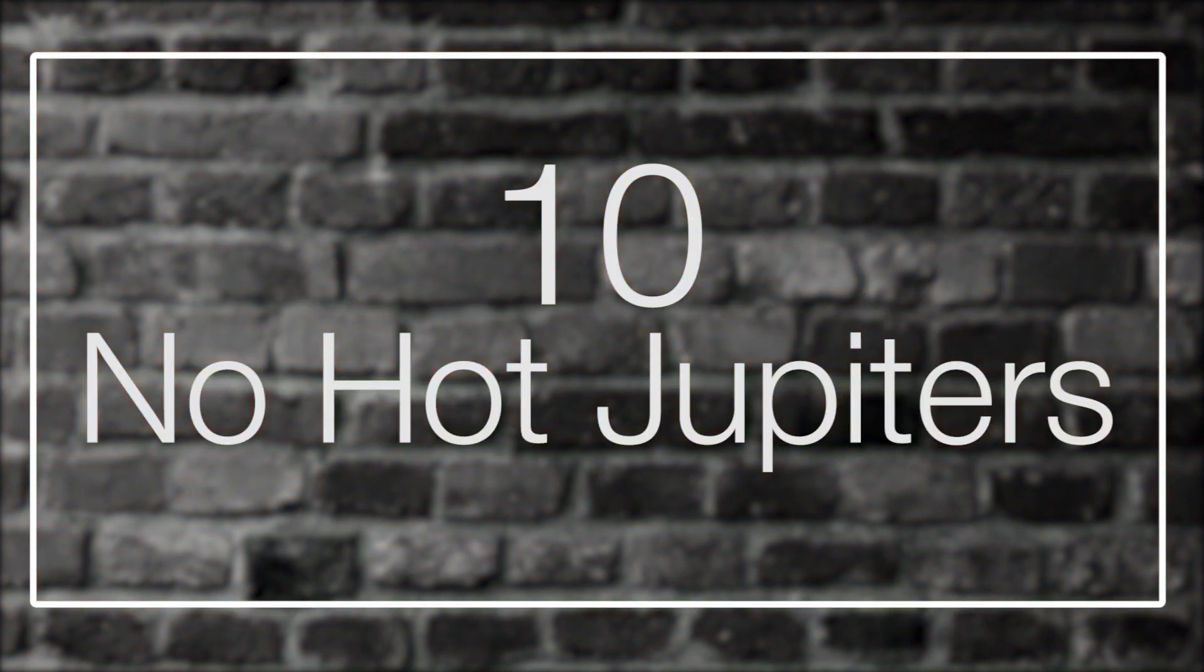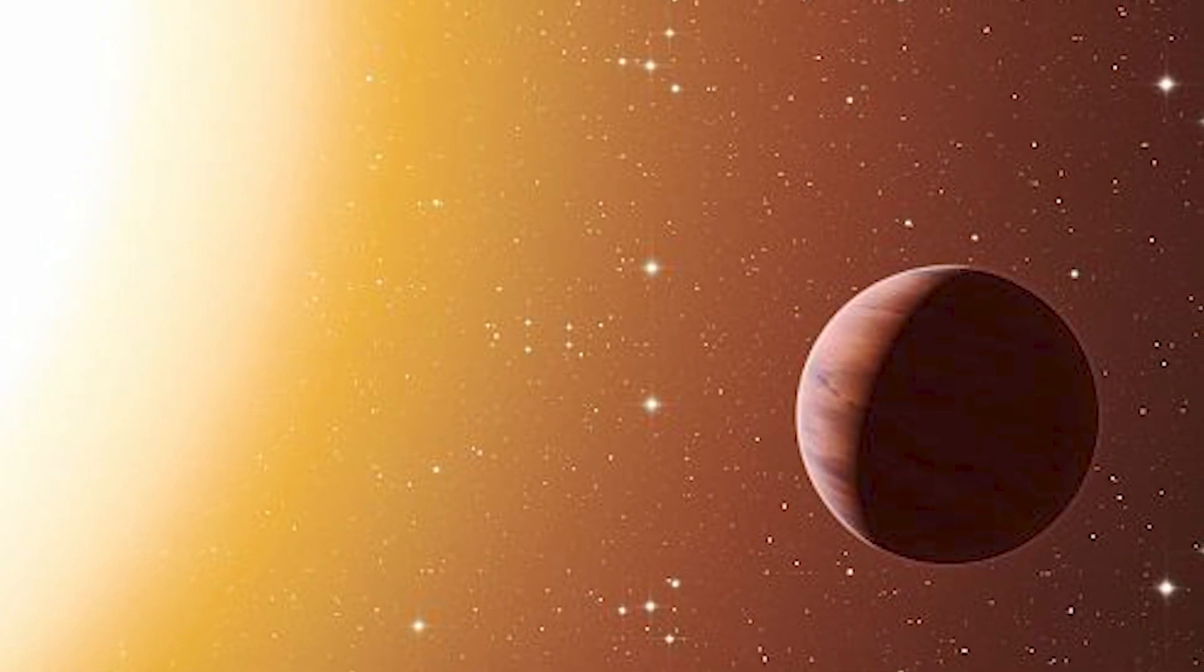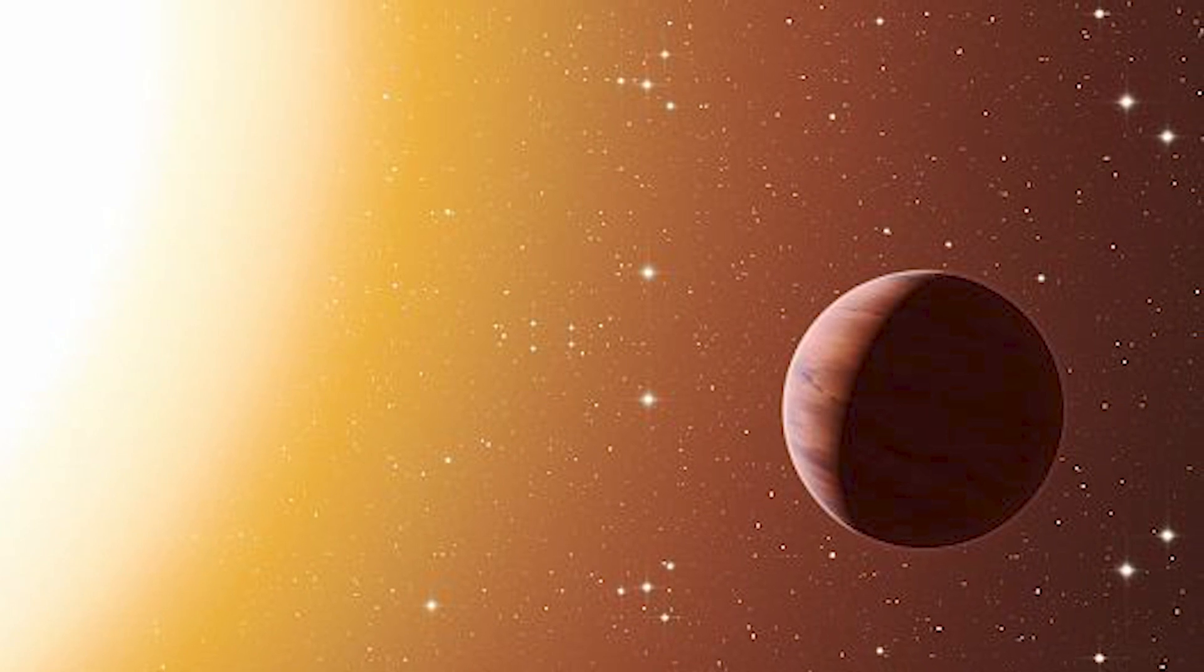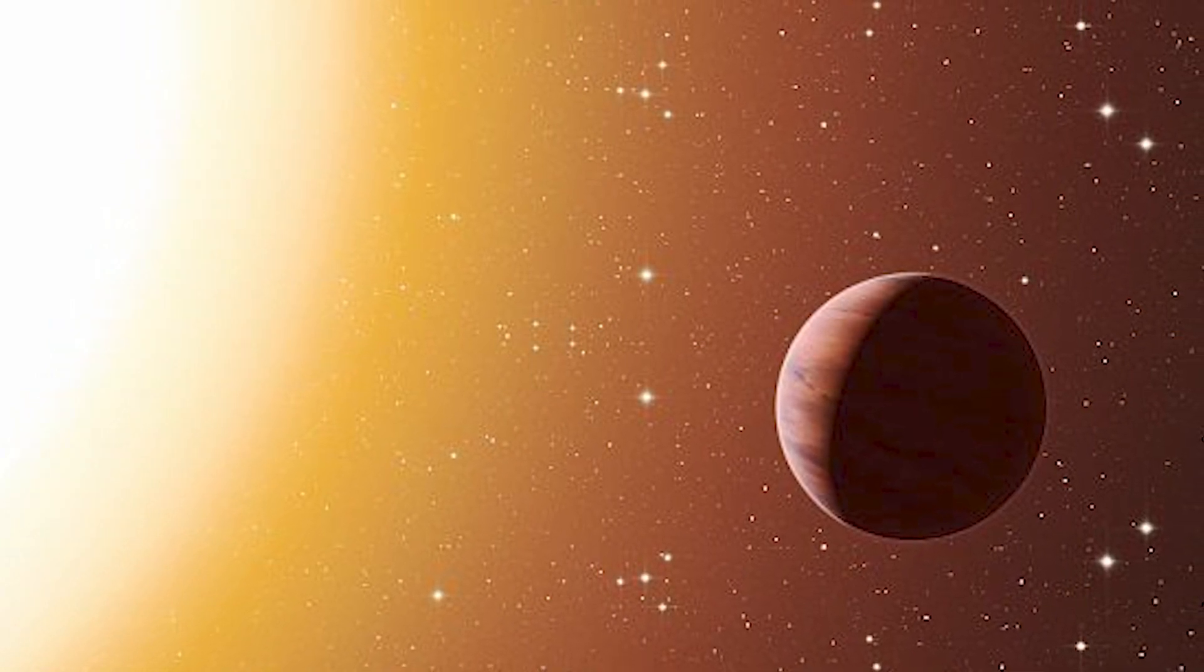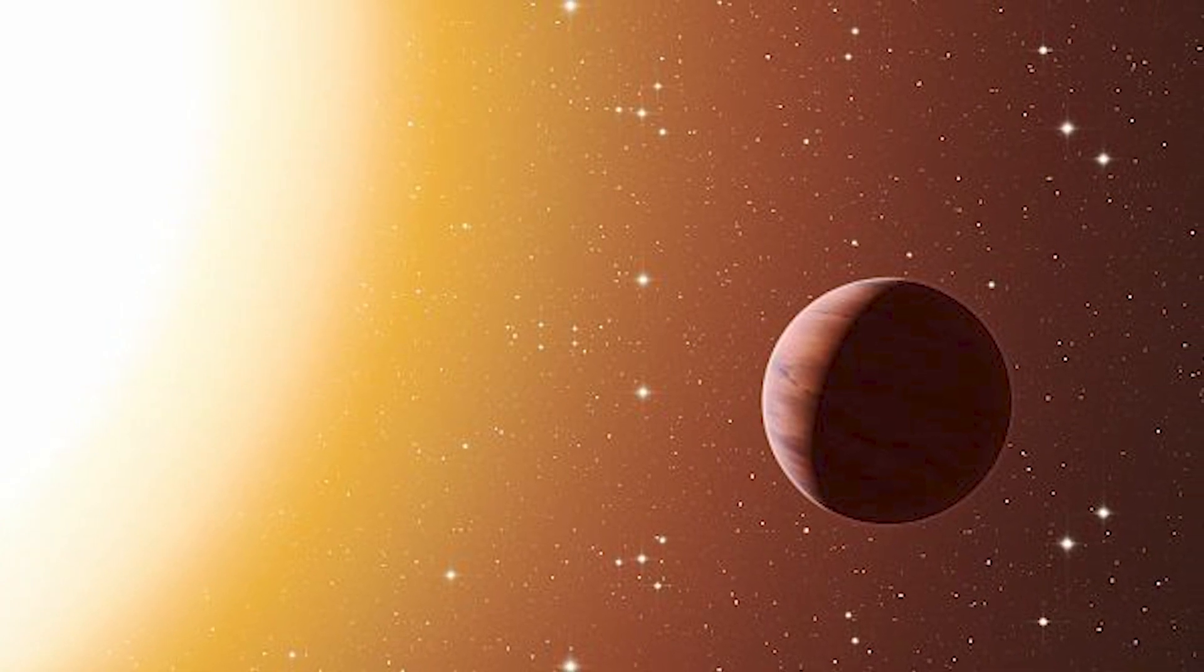10. No Hot Jupiters. Hot Jupiters were one of the first types of exoplanets discovered in the early days of exoplanet hunting. They orbit uncomfortably close to their parent stars and burn incredibly hot. The surprising thing for astronomers is that there are far more close-orbiting gas giants than close-orbiting rocky worlds like Mercury.